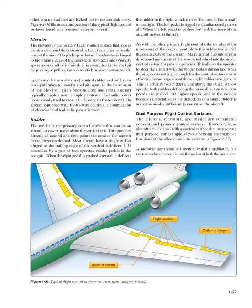The rudder is the primary control surface that causes an aircraft to yaw, or move about the vertical axis, providing directional control. Most aircraft have a single rudder hinged to the trailing edge of the vertical stabilizer, controlled by a pair of foot-operated rudder pedals in the cockpit. When the right pedal is pushed forward, it deflects the rudder to the right, which moves the nose of the aircraft to the right, and the left pedal simultaneously moves aft. When the left pedal is pushed forward, the nose moves to the left. Many aircraft incorporate the directional movement of the nose or tail wheel into the rudder control system for ground operation, allowing the operator to steer the aircraft with the rudder pedals during taxi when airspeed is not high enough for the control surfaces to be effective.